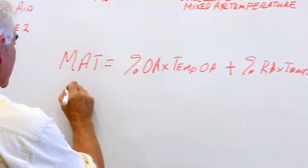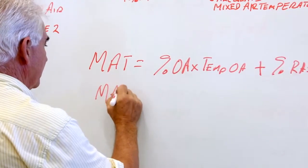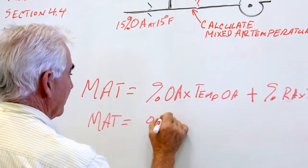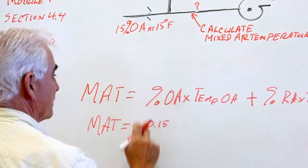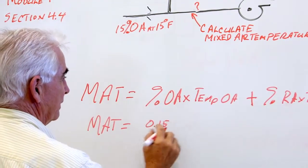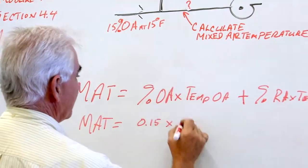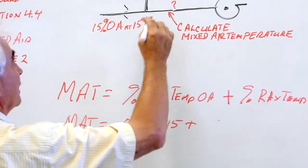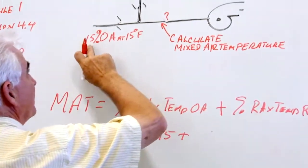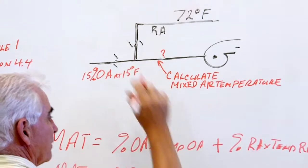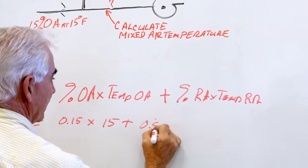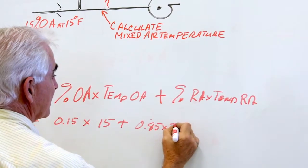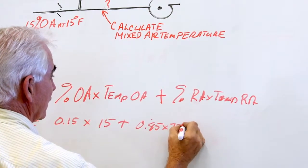To substitute, our mixed air temperature is going to be 0.15, change 15% to a decimal, times 15 degrees plus, if this is 15% then this must be 85% of the mix, we got 0.85 times 72 degrees Fahrenheit.